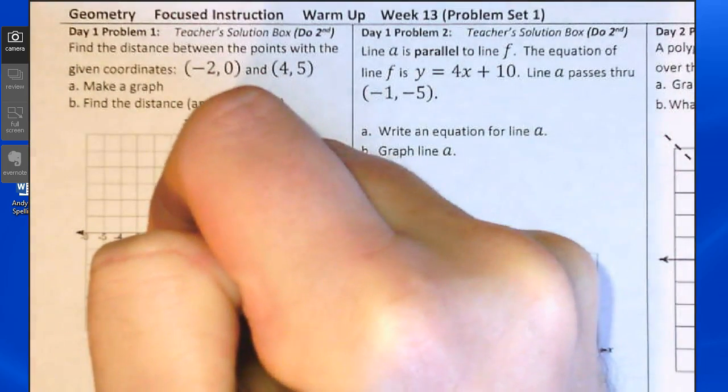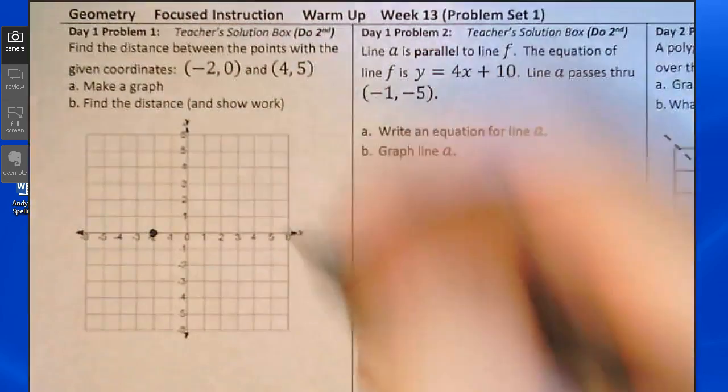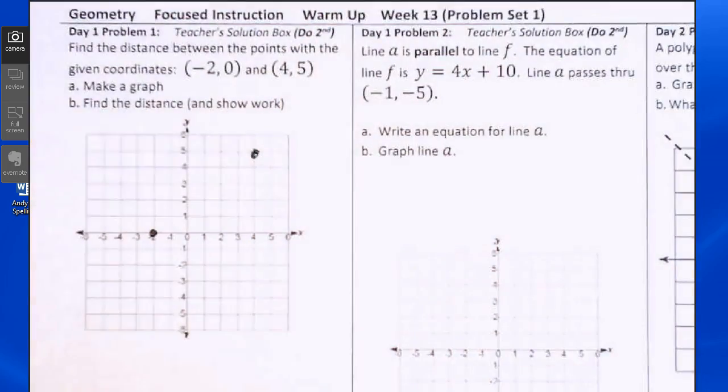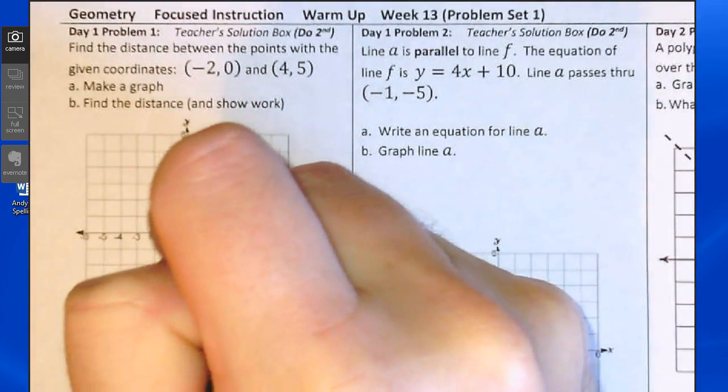Negative 2 comma 0 is located here. 4 comma 5 is located here. If we want to find the distance between these points, we should connect them to create a segment.